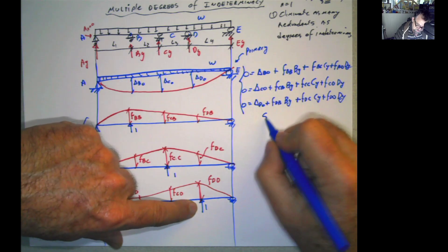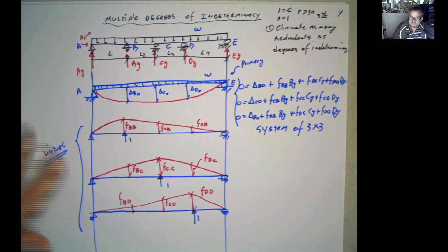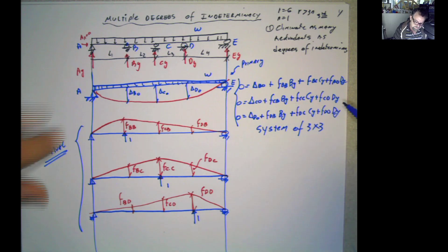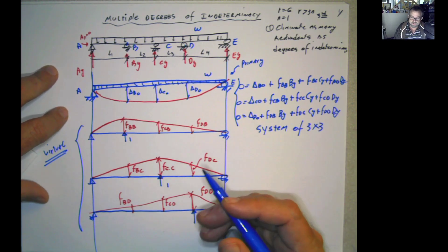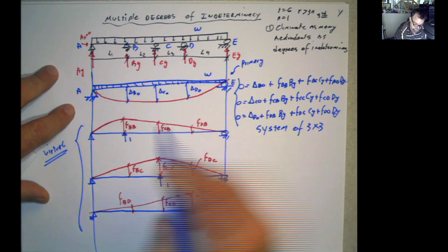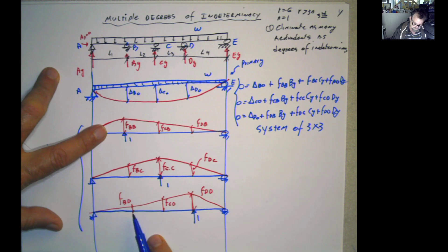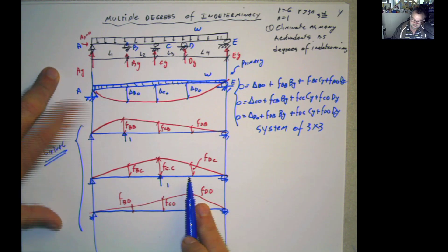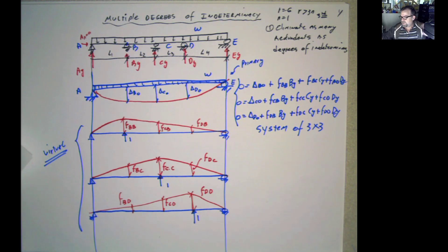Does that take time? Yes, that takes time. We have to calculate the deflections. Using virtual work it's a lot of work; using pre-tabulated formulas from books it's going to be faster. If the structure is symmetric, it's even faster, because certain flexibility coefficients will be equal to each other. So this is the introduction to the force method with several degrees of indeterminacy. I'm going to solve an example using this concept right now. Keep watching, please.